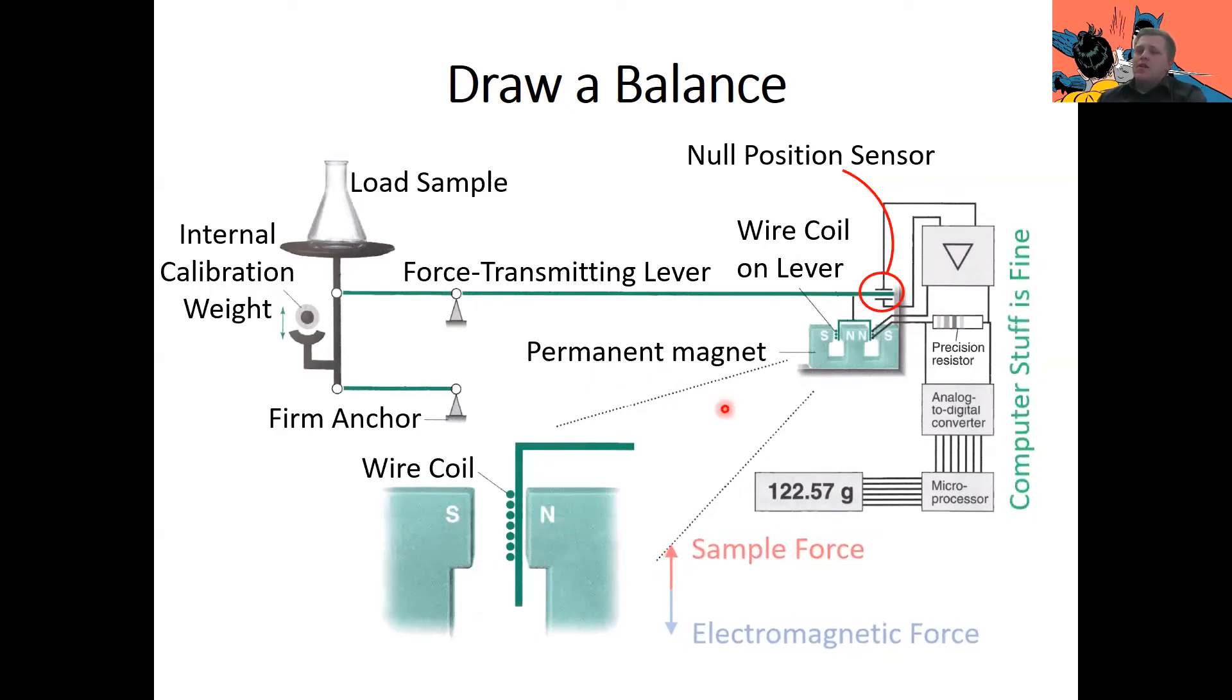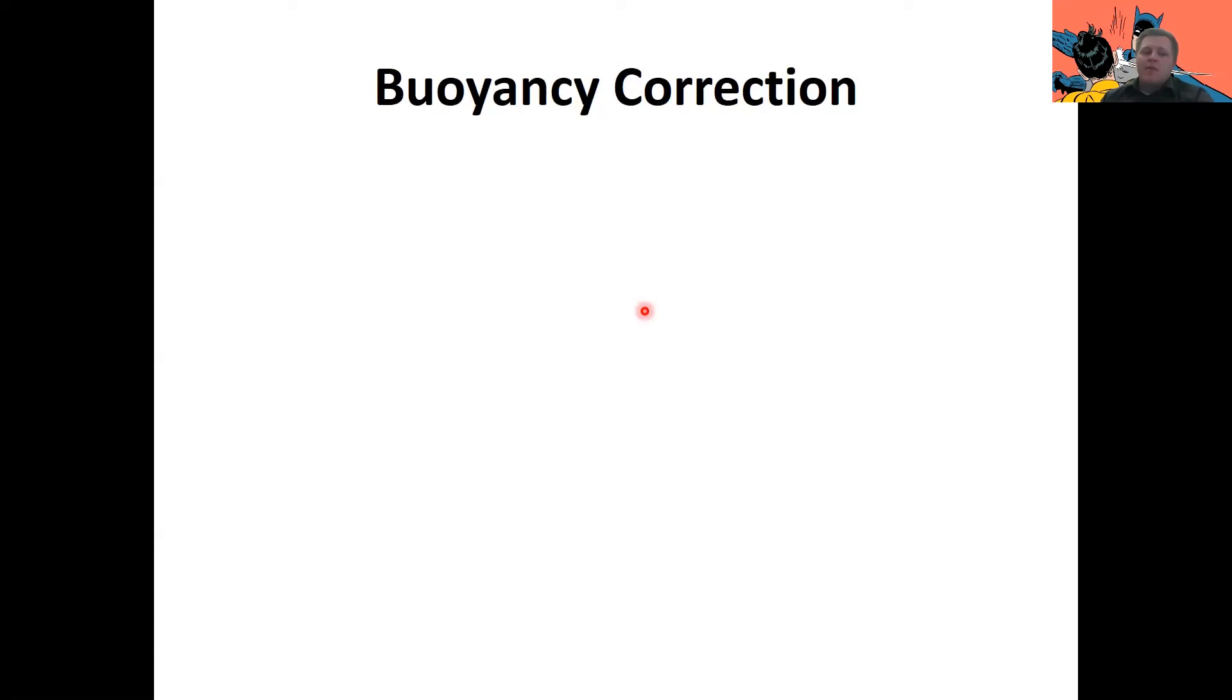Now, in analytical chemistry, we're all about having super high accuracy and precision. So I'm going to introduce you to another topic now called buoyancy correction. So this has to do with measuring things using a balance. And I'm going to start off by showing you a YouTube clip. These are some cute girls that are going to show you a cool experiment using heavy gases.